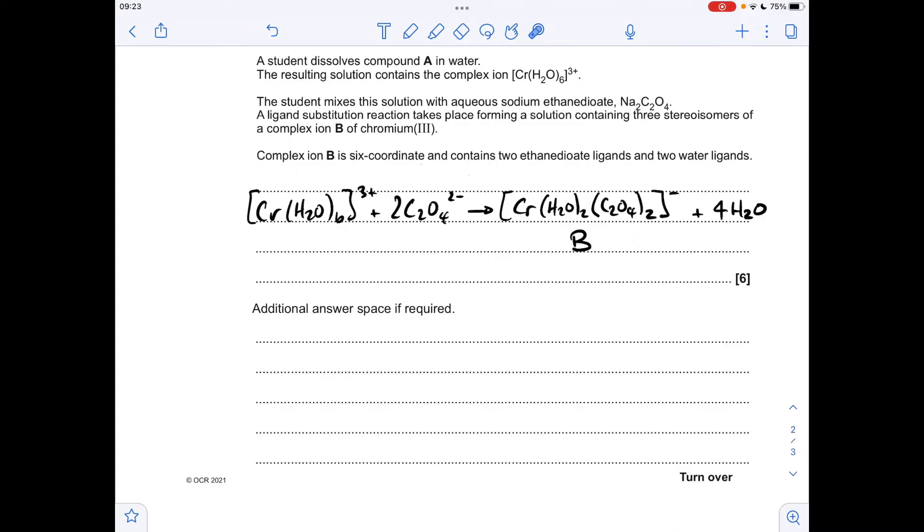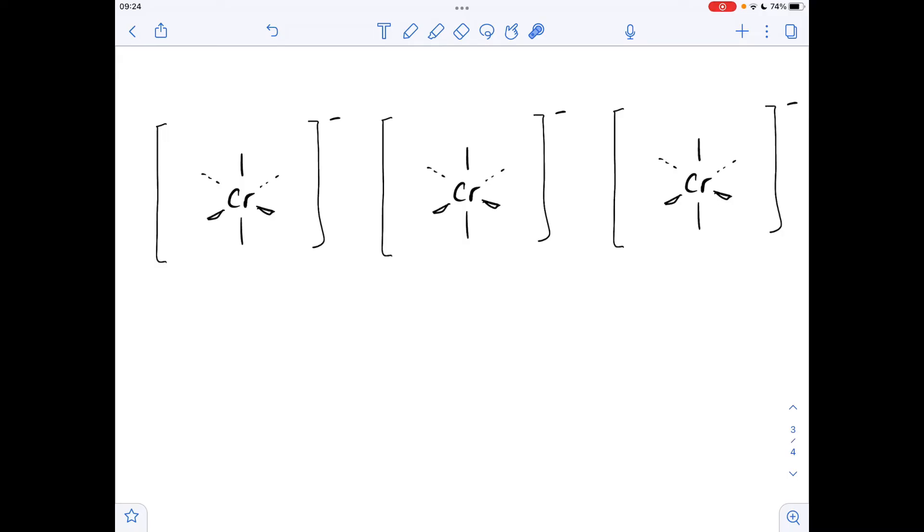So all we need to do now is draw these three stereoisomers. Remember we're told it's octahedral, so I've got my empty octahedral waiting to have the ligands put on. The first one I'm going to draw is the trans version, where the H2O ligands are 180 degrees apart. So that means here we're going to have a bidentate ligand there, the ethane diuate ligand there, and there.